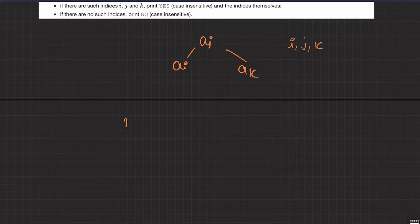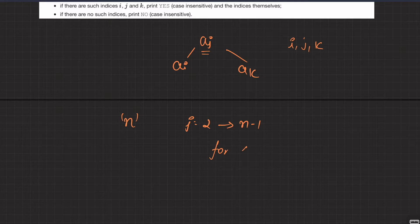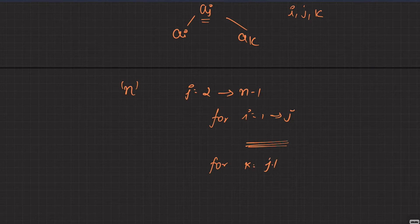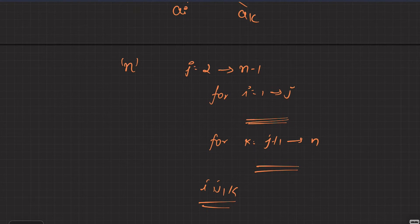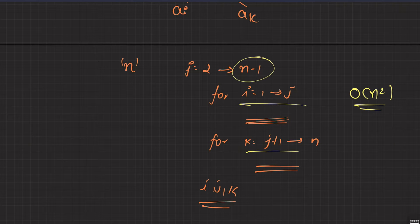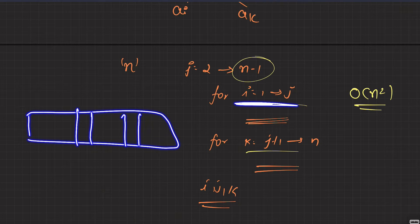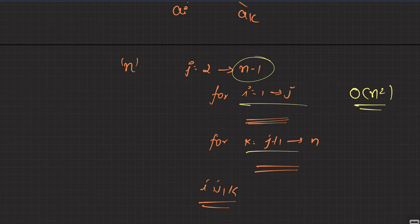One approach is to try every possible value of j, going from j equals 2 till n minus 1. For each j, check i from 1 to j for some element less than aj, and check k from j+1 to n for some element less than aj. If found, return i, j, and k. But this is O(n²) — a pure brute force that doesn't exploit the permutation property — and would give a TLE.